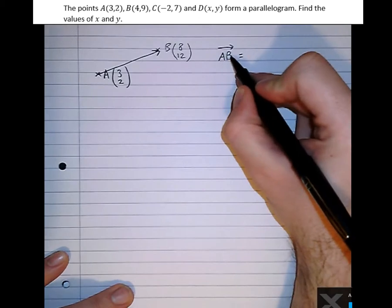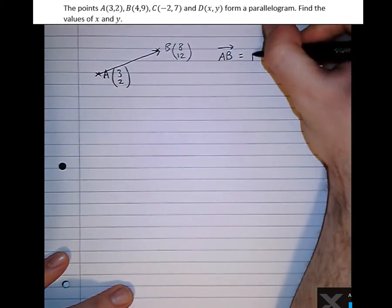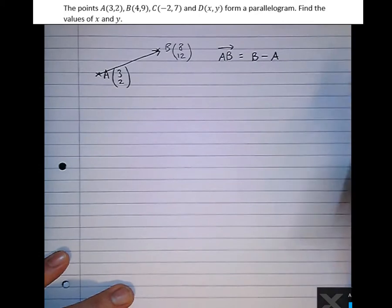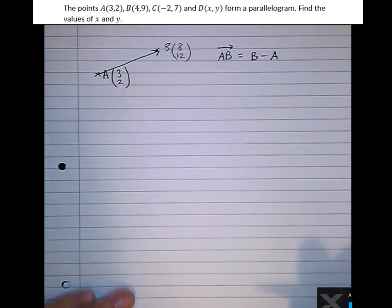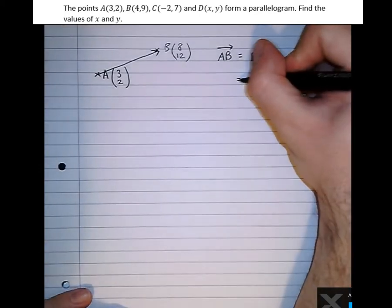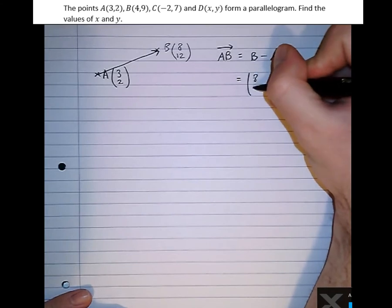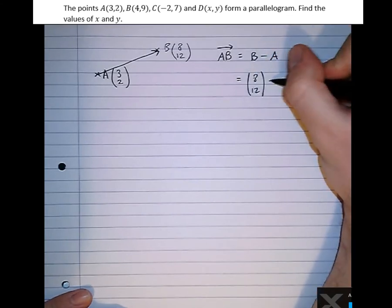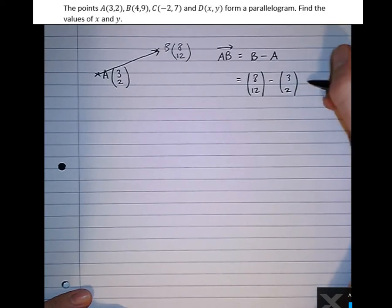That means how to get from A to B. Well we do that in all cases by simply doing the position of B, take away the position of A. The difference between them is how to get from one to the other. So in this case it's (8, 12), the second, take the first, (3, 2), which gives us (5, 10).